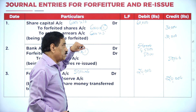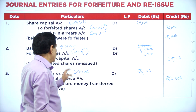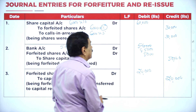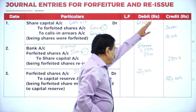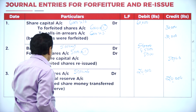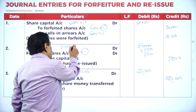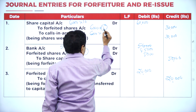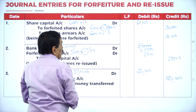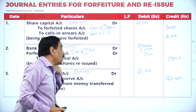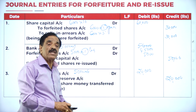For 6,000 shares forfeited and 5,000 reissued at a loss of ₹1 per share: forfeiture gain is ₹5 per share, re-issue loss is ₹1 per share, net gain is ₹4 per share. For 5,000 reissued shares: 5,000 × 4 = ₹20,000 goes to capital reserve.